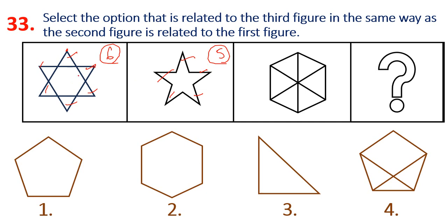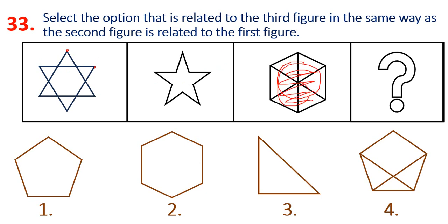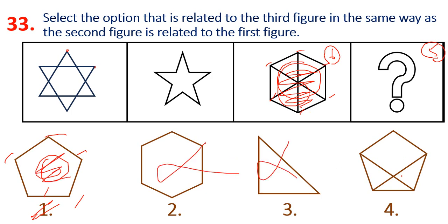Looking at the lines inside: the first figure has lines, and so does the second. The pattern involves 6 corners going to 5 corners, and lines inside. For the third figure, which has 6 corners, the answer should have 5 corners but with extra lines on top. Option 1 is the right answer.